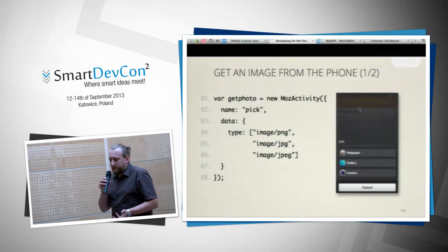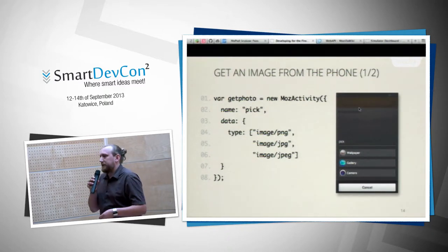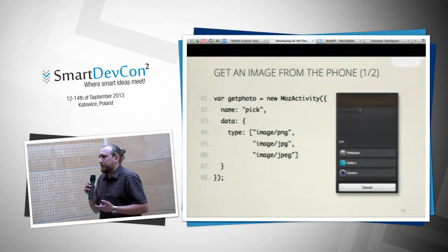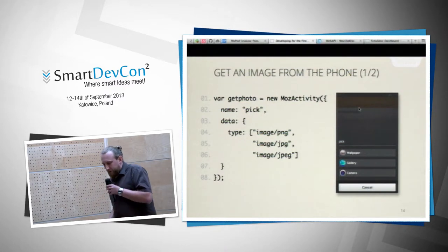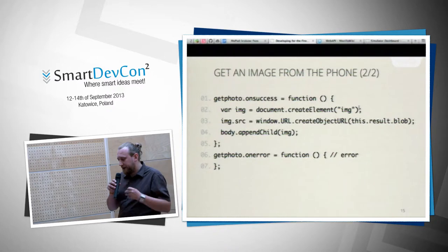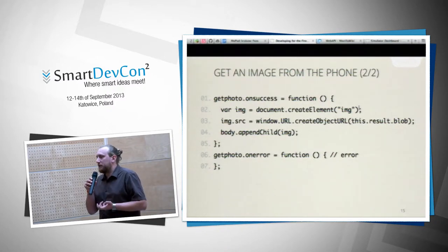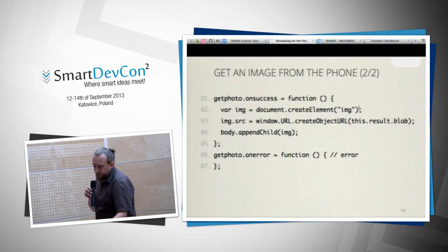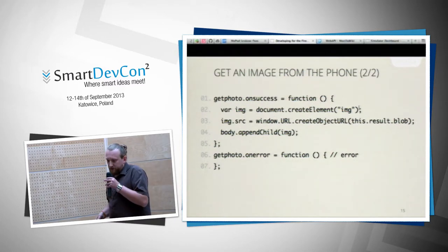Another web activity is 'pick'. You specify the type of content you want — for example, images — and Firefox OS provides a list of apps that can supply them: wallpaper, gallery, camera. You don't have to build camera handling yourself. You just request the MozActivity, and in the callback you receive the result as a blob. Assuming 'body' is a variable representing the DOM body, this will display the image on screen.